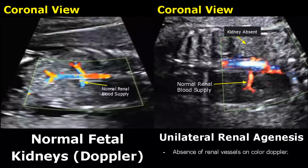In this image we have Doppler analysis. Here we can see the renal vessels in the normal image supplying both kidneys. Whereas in this image, we can only see renal vessels on one side, meaning there is only one kidney and there is no renal vessel located on the other side.